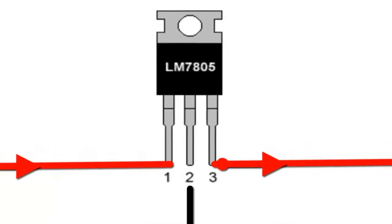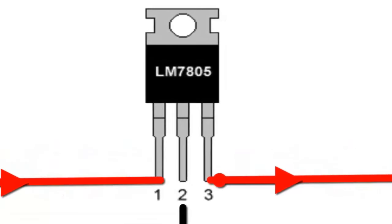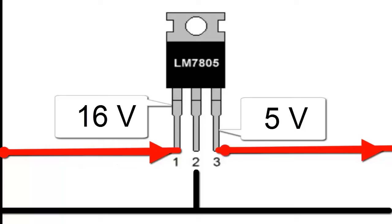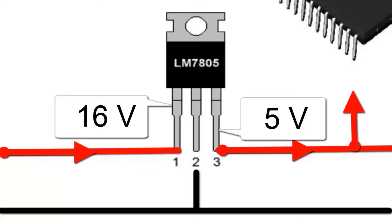A 7805 regulator is an integrated circuit used to maintain a constant output voltage very close to 5 volts, regardless of the input voltage at the regulator's output. Regulation is important for powering electronic circuits that require a specific voltage to function correctly.